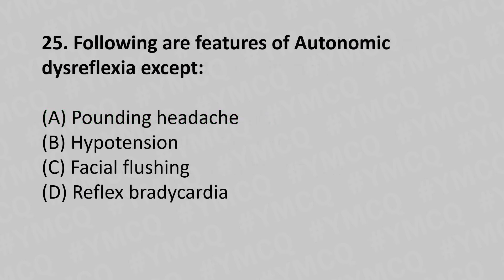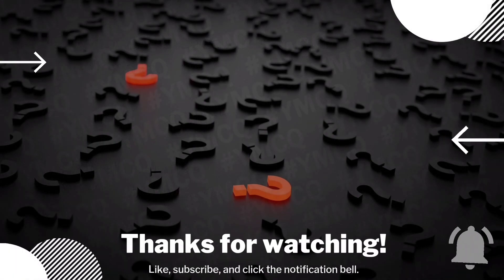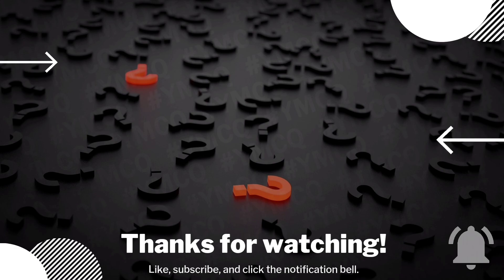Moving to our 25th question. Following are the features of autonomic dysreflexia except: Option A, pounding headache. Option B, hypertension. Option C, facial flushing. Option D, reflex bradycardia. And the answer is Option B, hypotension. That's all for today — if you need clarification on any question, do comment in the comment box. I'll be back with part two soon, so do subscribe to this channel. Thank you.